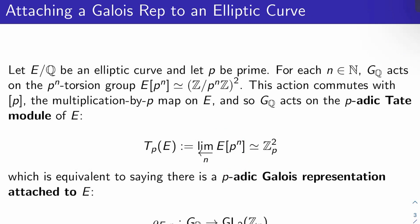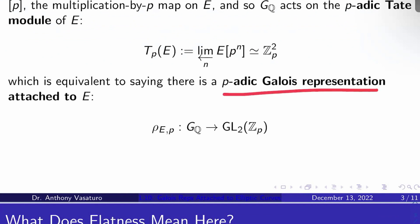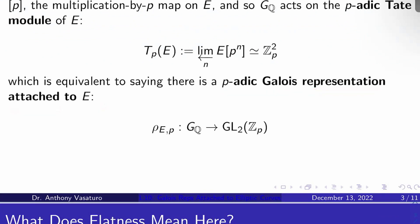A Galois action is the same thing as a Galois representation, so there's a P-adic Galois representation attached to E, which we call rho_{E,P}, a continuous group homomorphism from G_Q to GL2 of Z_P.